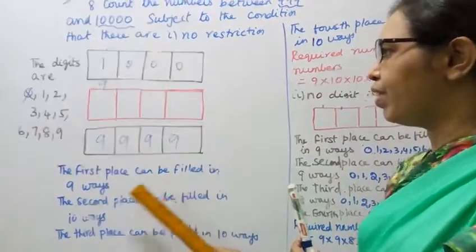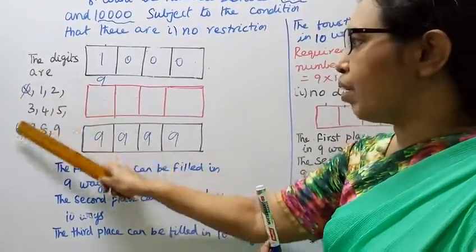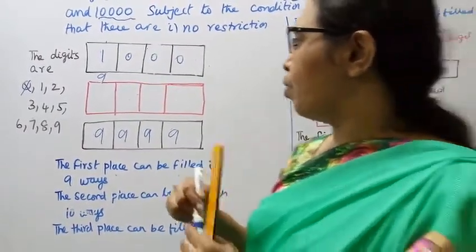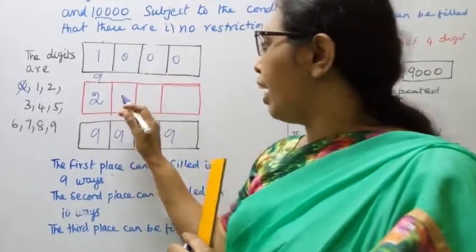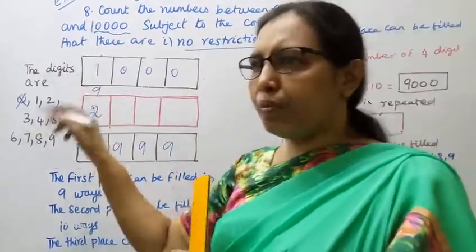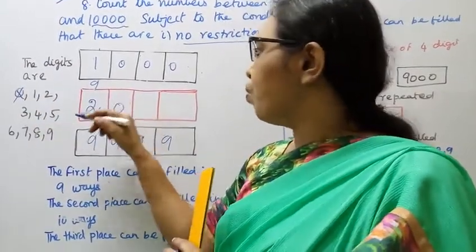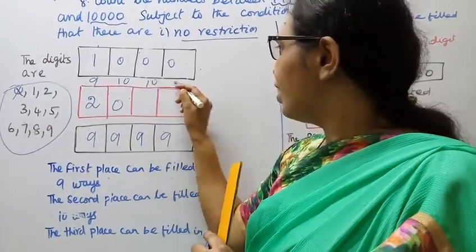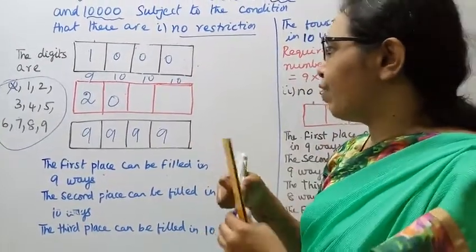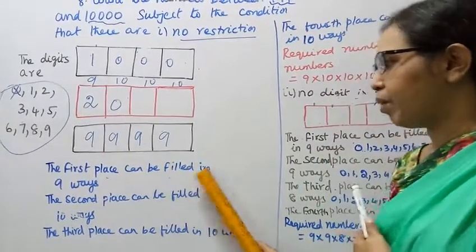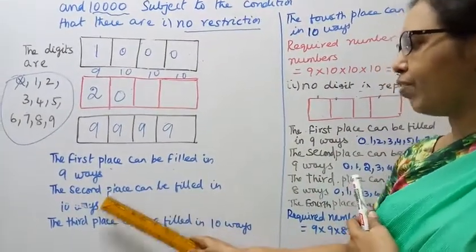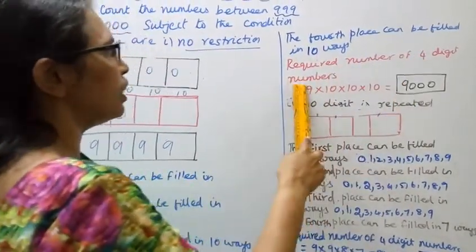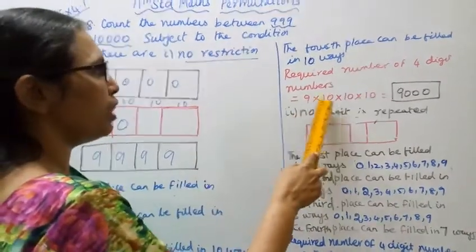The first place can be filled in 9 ways. The second place can be filled in 10 ways. The third place can be filled in 10 ways. The fourth place can be filled in 10 ways. So the total number of 4-digit numbers is 9 × 10 × 10 × 10 = 9000.